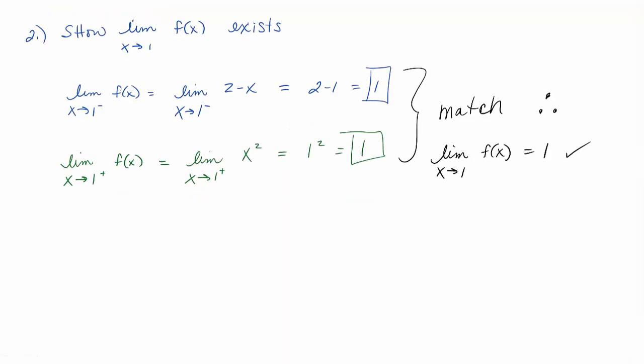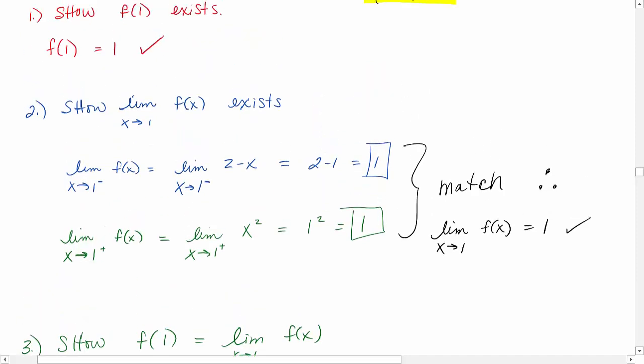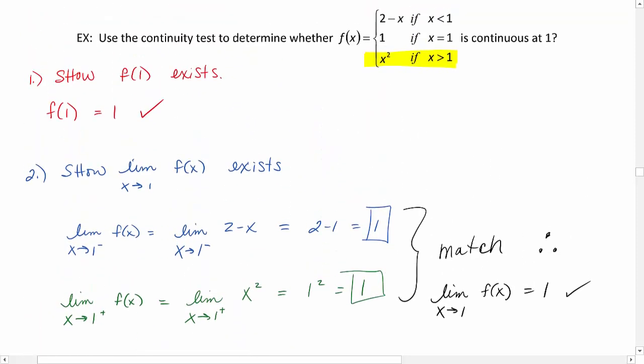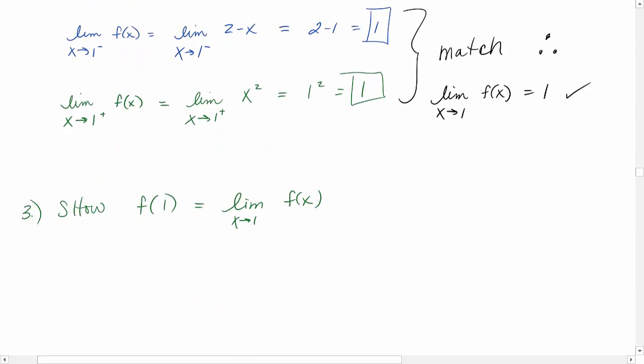Last thing we need to do is show that f of 1 is equal to the limit as x approaches 1 of f of x. f of 1 was 1. The limit as x approaches 1 of f of x is 1.